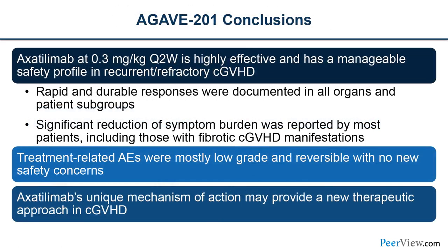In conclusion for AGAVE-201: axatilumab at 0.3 mg/kg every two weeks is highly effective with a manageable safety profile. It was associated with rapid and durable responses across all organs and patient subgroups, with significant reduction in symptom burden — including those with fibrosis. Treatment-related adverse events were mostly low-grade and reversible with no new safety concerns. Axatilumab potentially occupies a unique space with a different mechanism of action compared to other FDA-approved agents in chronic GVHD, showing clinical responses even after standard-of-care drugs have been used. AGAVE-201 was a registrational trial and results are very promising, though FDA approval has not yet been granted.